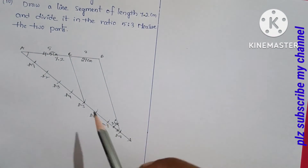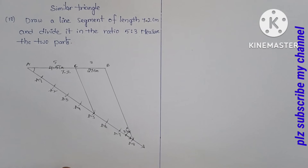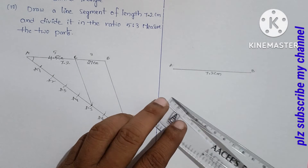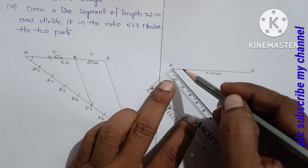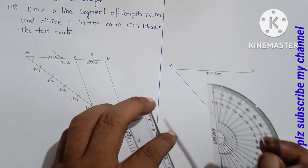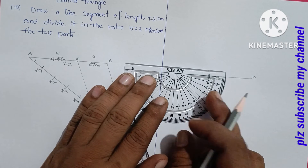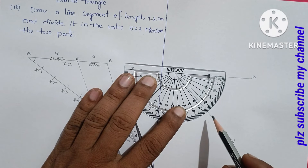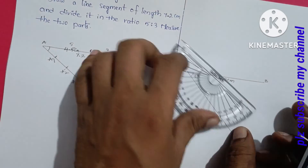I will show you the line — correct A, B with the ratio cut. This is a different model and it is easy to do. 7.2 cm line segment with an acute angle — this is a different model using an acute angle. X is an acute angle — 46 degrees.